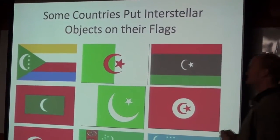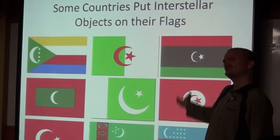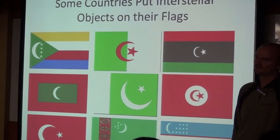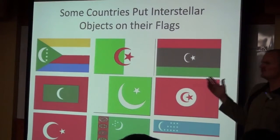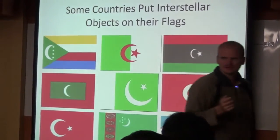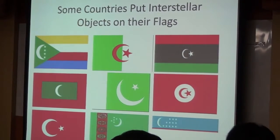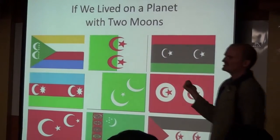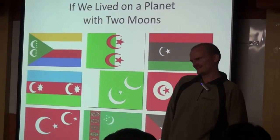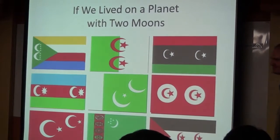Some countries put interstellar objects on their flags — moon and stars. What do these flags have in common? They're all Islamic countries. Putting the moon on your flag is okay. Why? Our planet only has one moon. But try to imagine: what if we lived on a planet with more than one moon? We would need to change the flag. Mars has two moons, so if they ever lived on Mars, they'd have to change all their flags. Saturn has 60 moons — the flag would be really congested at that point. Someone's not thinking.